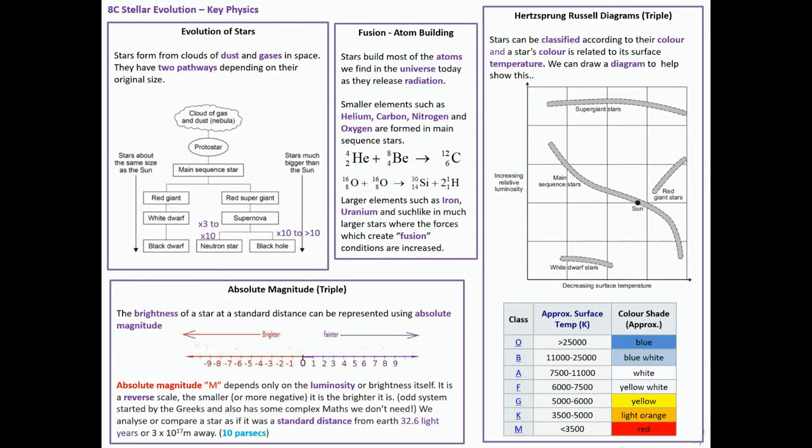Okay, so this is an IGCSE introductory video about 8C stellar evolution. So really, it's about how stars evolve and what happens in stars. So let's start with the middle. The simple idea of stars are fusion machines. They build most of the atoms we find, the vast majority that is, in the universe today as they release radiation. So like electromagnetic spectrum stuff and particles. Smaller elements such as helium, carbon, nitrogen, oxygen are formed in main sequence stars. So they're stars about the same size as our sun or a bit bigger. And they're in a sort of early part of their life. And so things like helium and beryllium fuse together to form carbon, which is a bigger atom. And then obviously, those atoms eventually are released into the universe. And they do things like build our bodies.